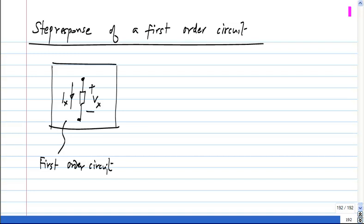A step response means that the input—or it could have multiple inputs—but let's consider a single input which steps up.